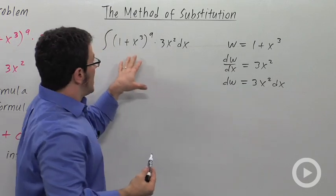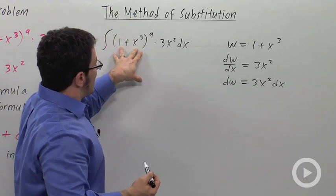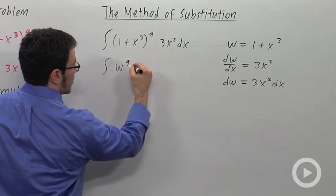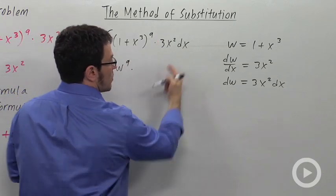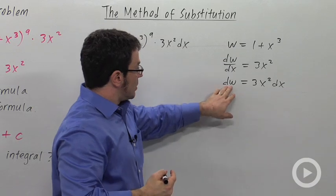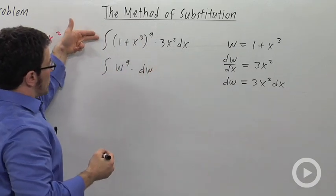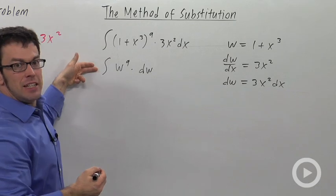Now let me show you how this works. So the 1 plus x cubed, that's w to the 9th times 3x squared dx. That's exactly dw. So by a change of variables, I've turned this difficult integral into this very easy one.